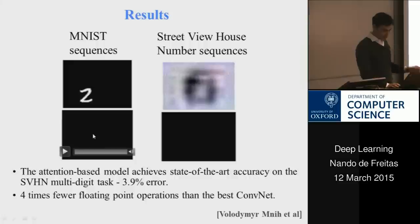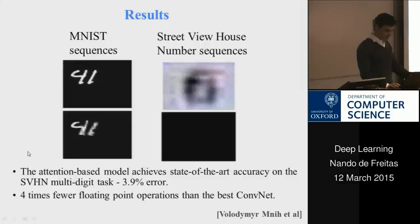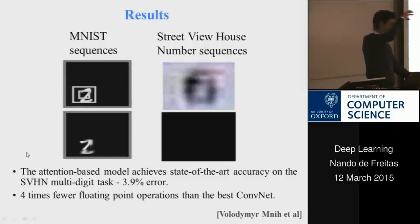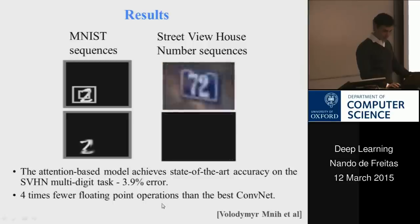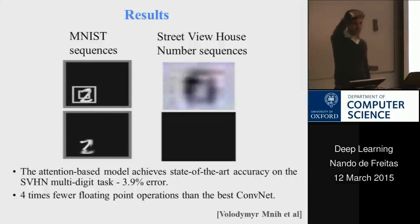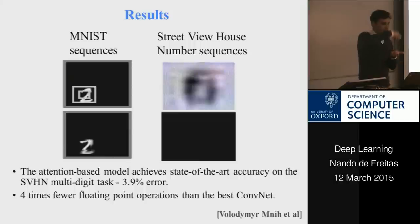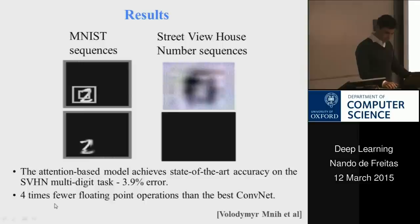Here is an example of how this system works in practice — reading numbers. The network learns to do the obvious thing: follow the numbers, don't read everywhere else. By only attending to smaller image patches rather than feeding in the full image to a ConvNet, you achieve much lower errors and the paper reports state-of-the-art accuracy on this dataset.